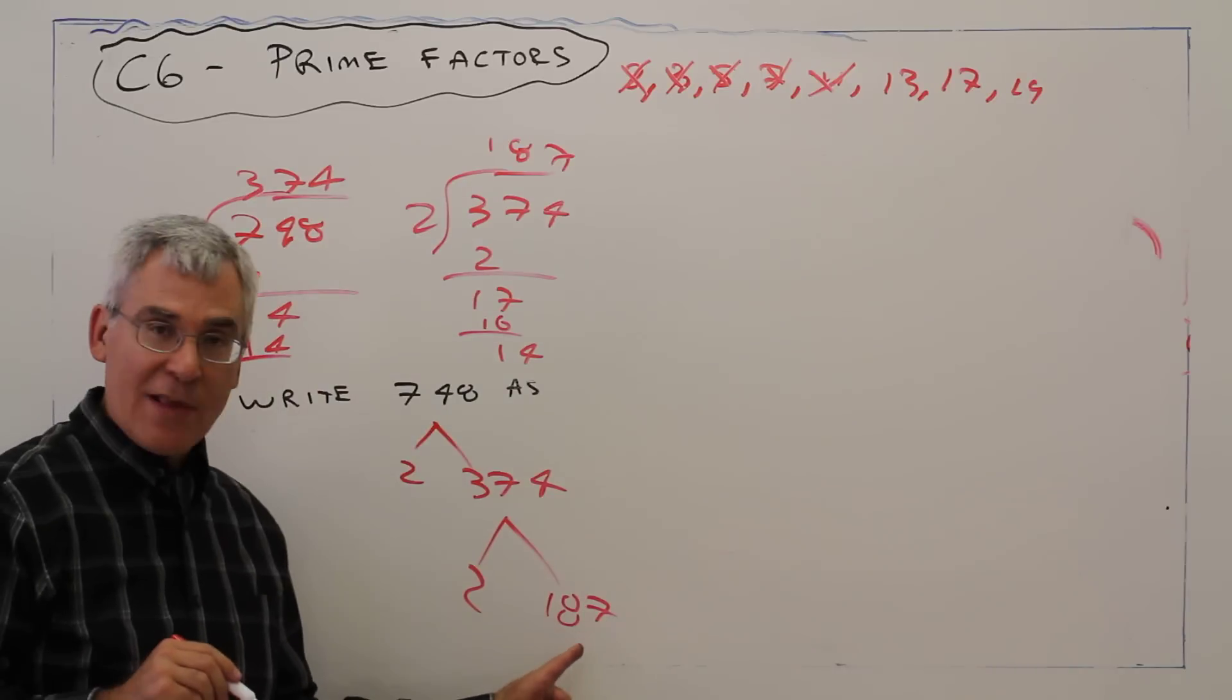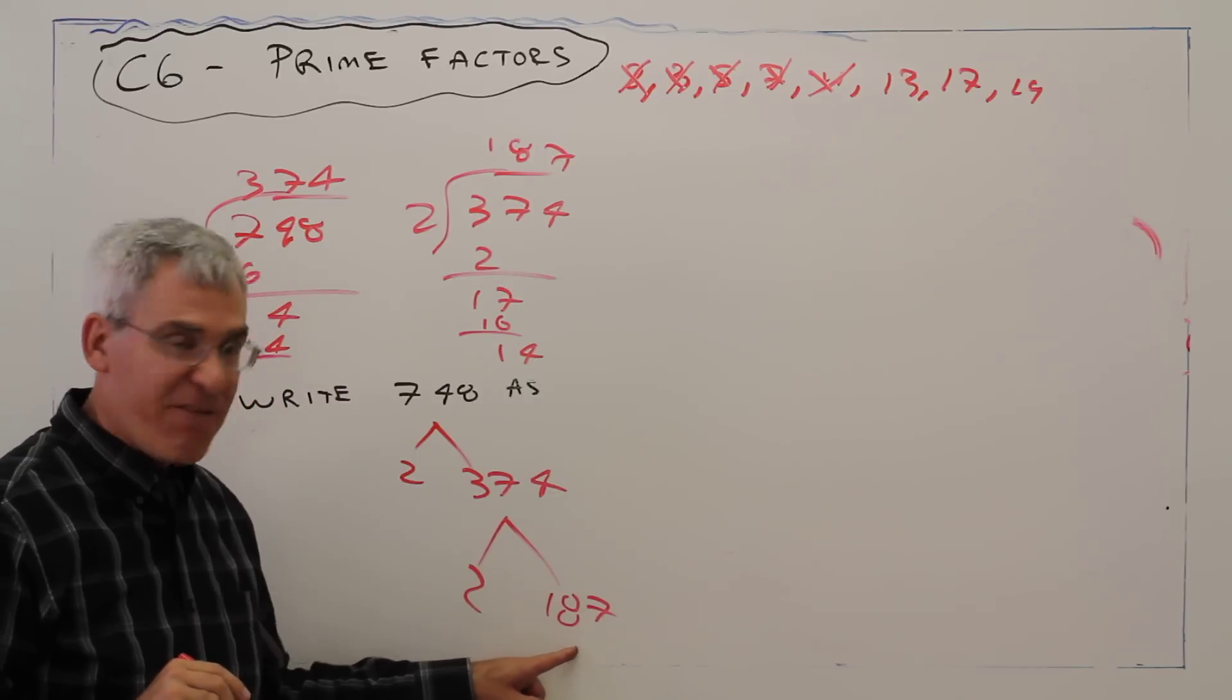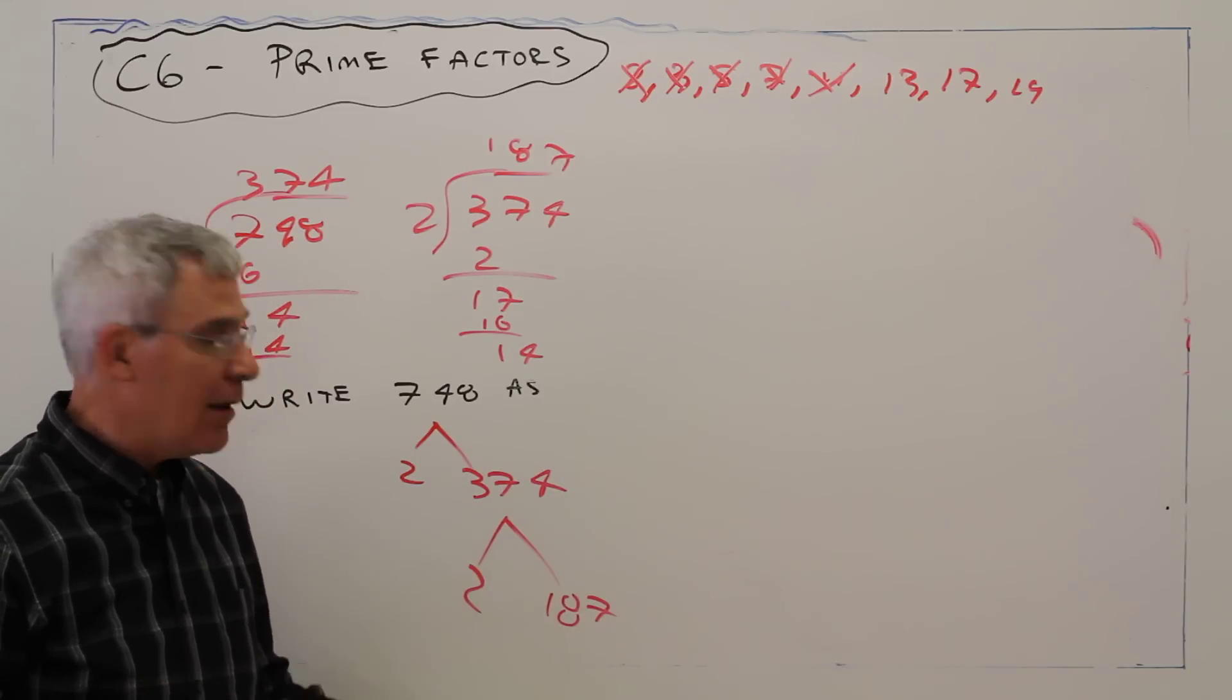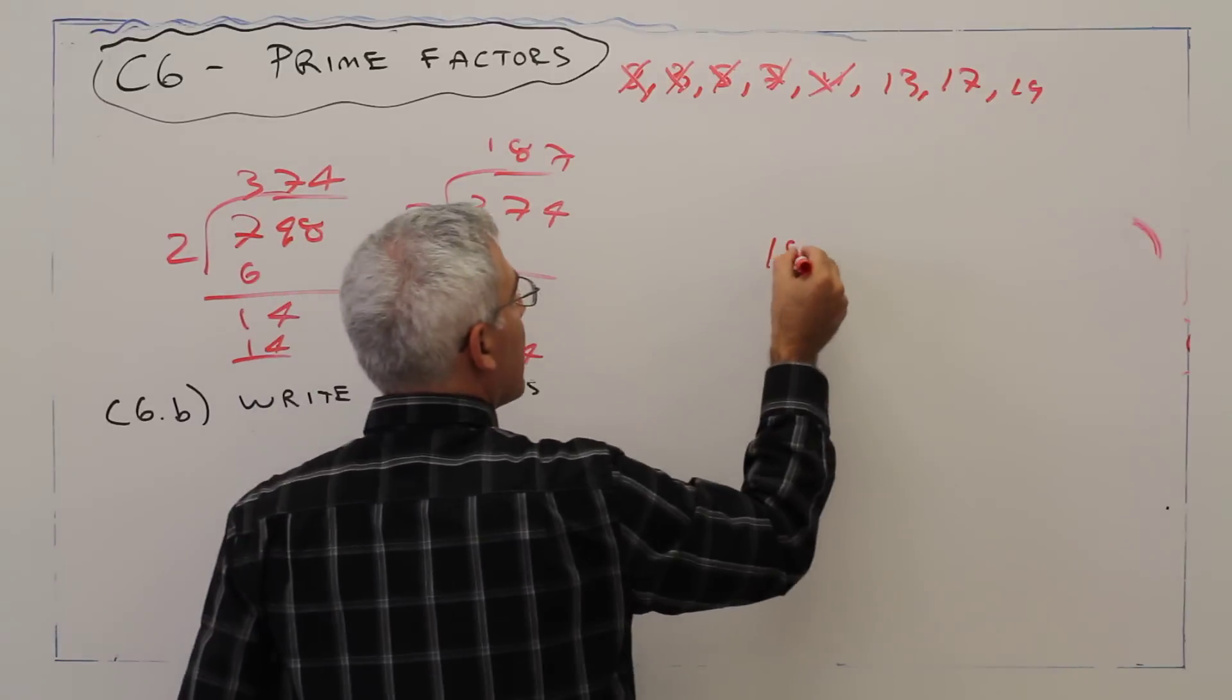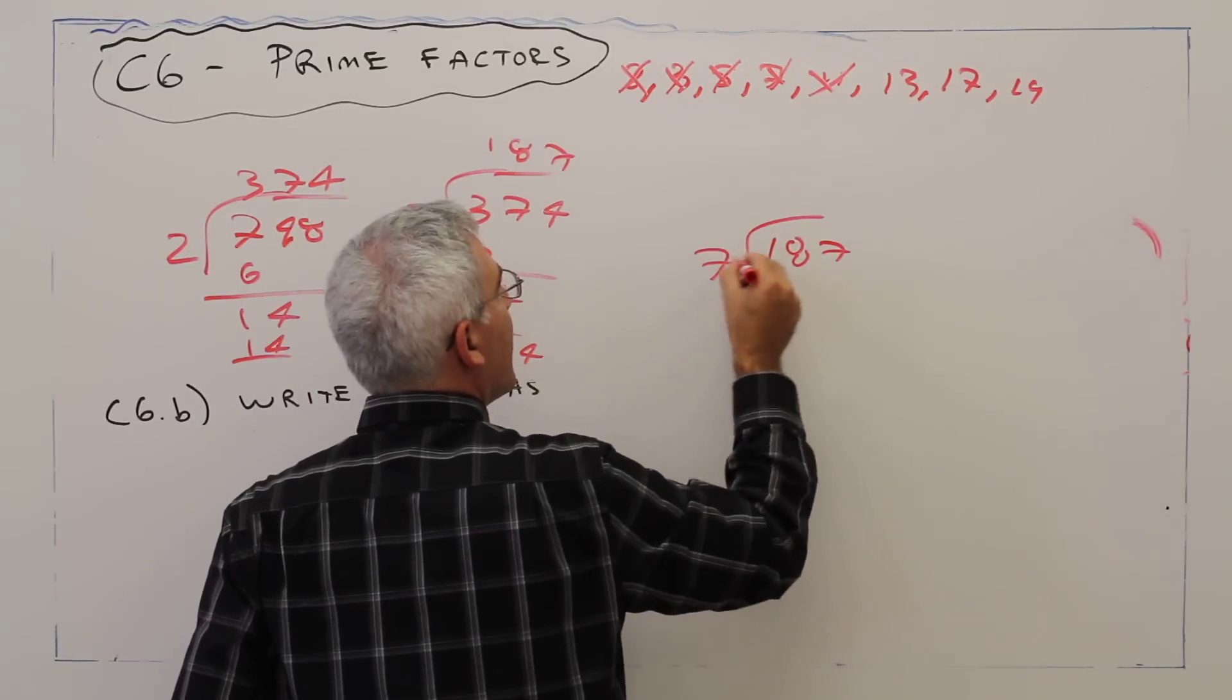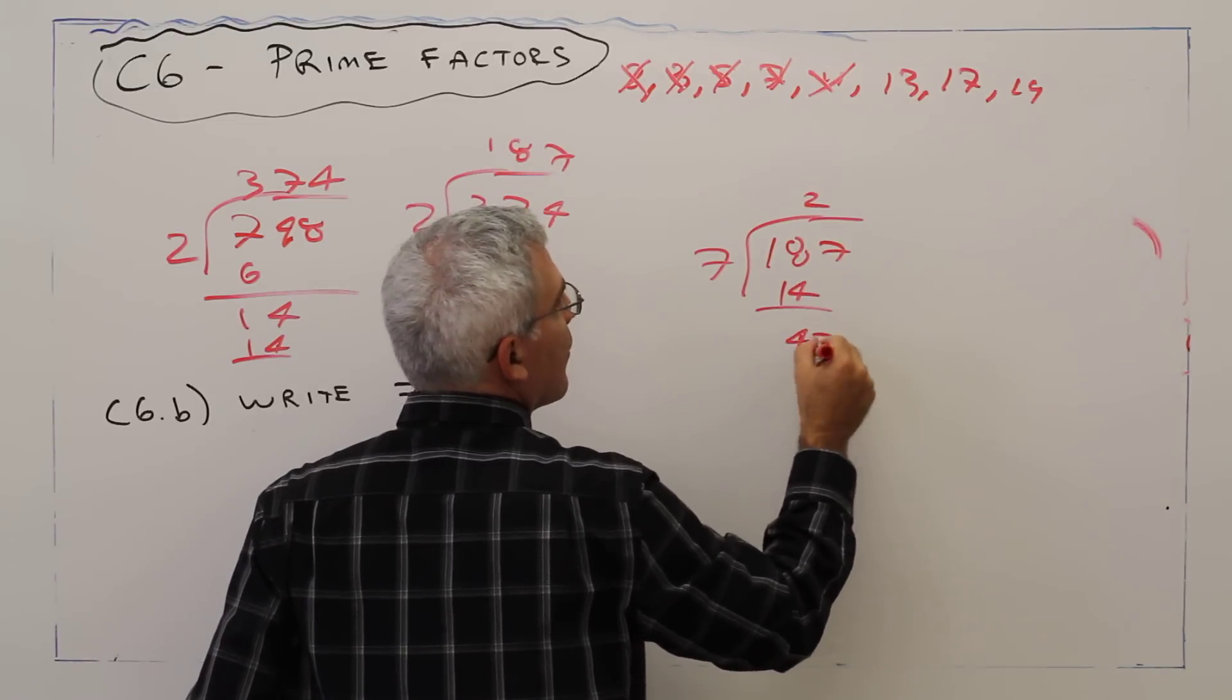So 2 does not go into 187. Sum of digits, 3 does not go into 187. 5 does not go into 187. Let's go through our list. We'll try 7, 11, etc. So 187 divided by 7. We get 2, 14, 14, 14, nope.